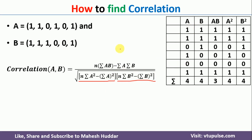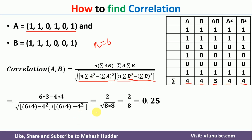If you look here, there are totally 6 elements, so N is equal to 6. We have the values from the table: summation of AB is 3, summation of A is 4, summation of B is 4, summation of A squared is 4, and summation of B squared is also 4. If you put all those values in, the equation gives a final answer of 0.25.